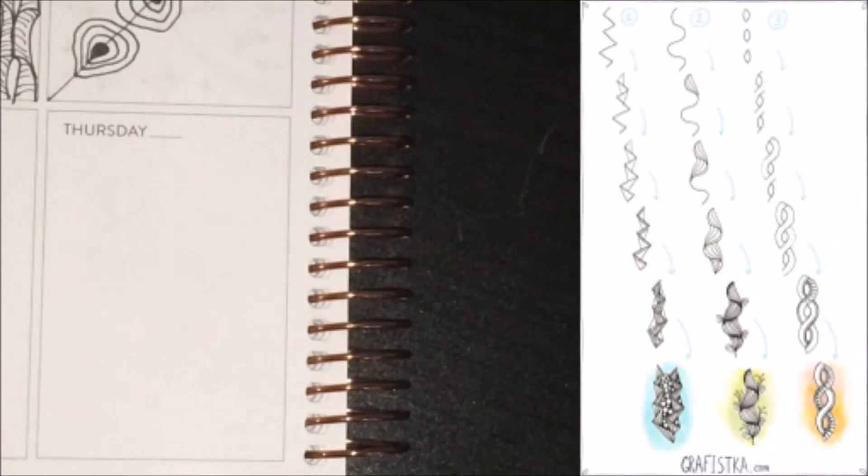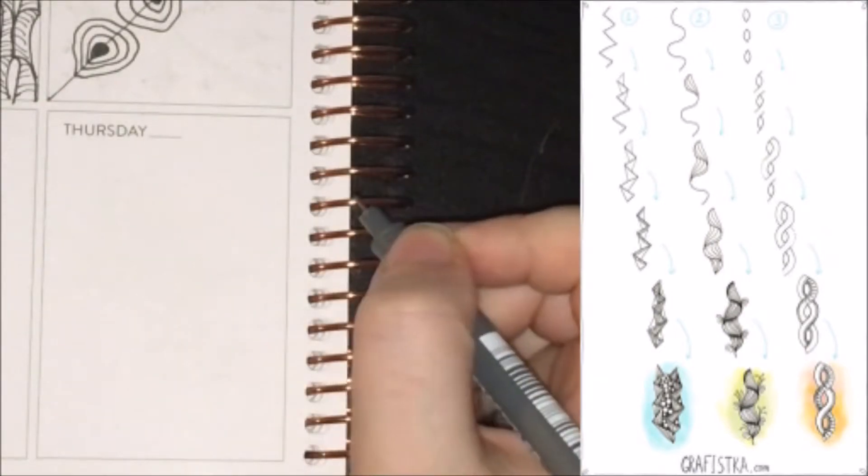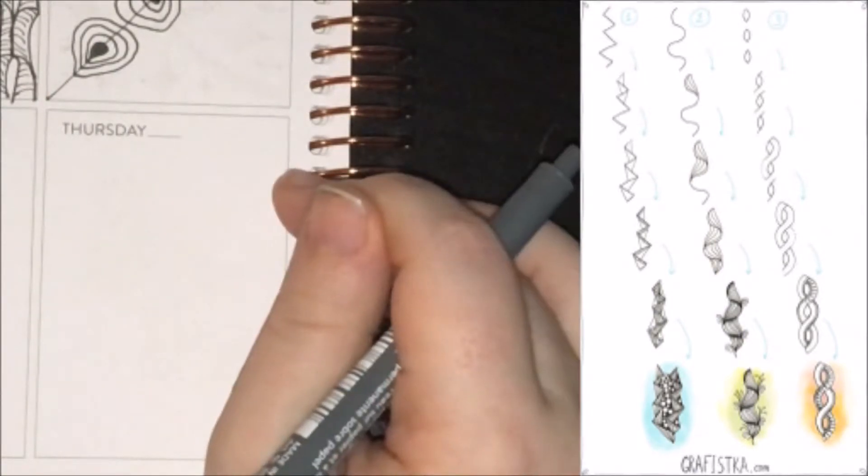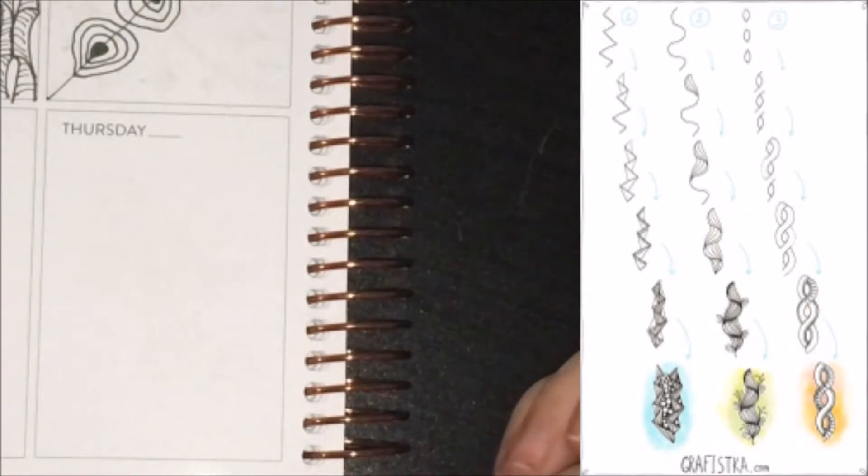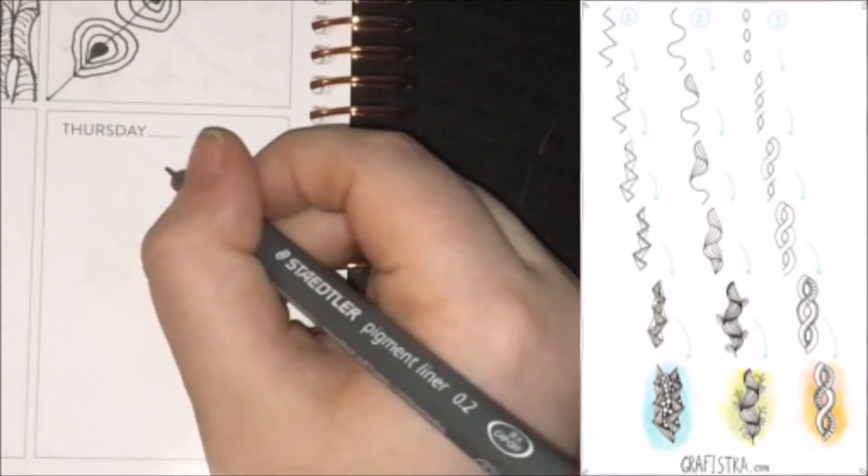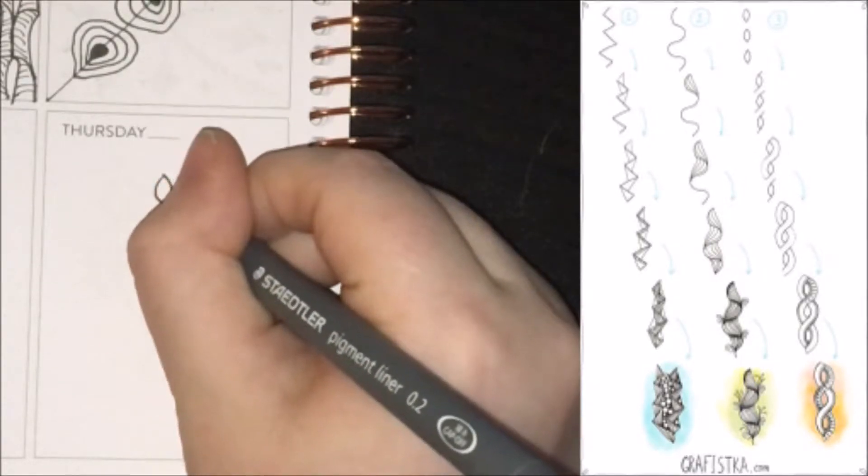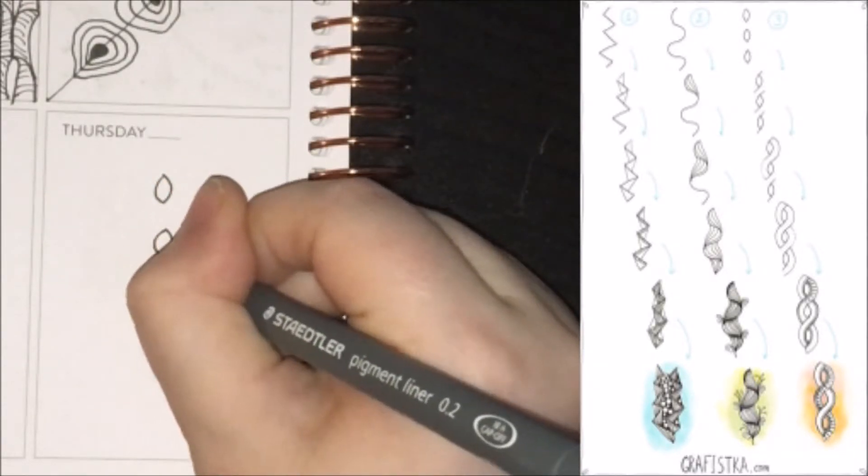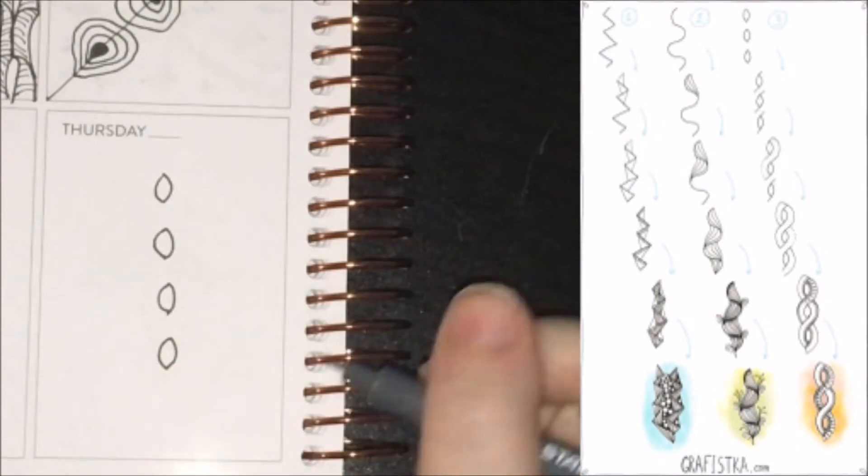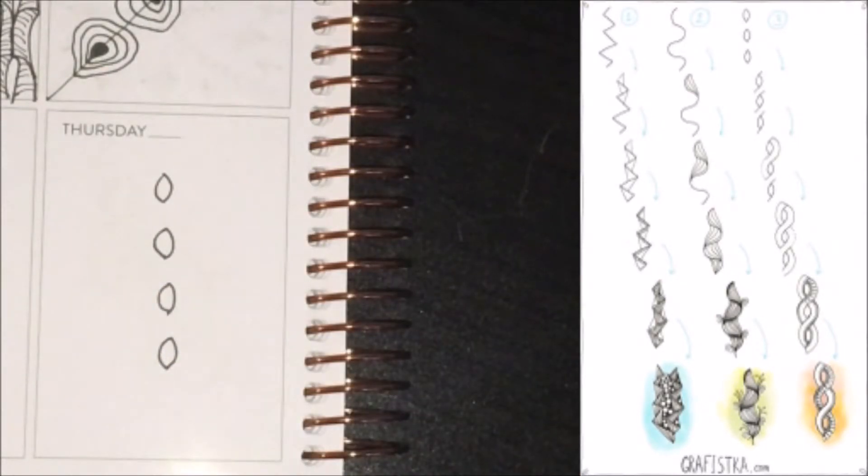The next tangle I have for you all today is also from Graphistica and is unnamed. And of the three in the picture on the right, I'm actually going to do the far right one. So the way you want to approach this is you want to create these oval-like shapes. And the way I suggest doing that is by doing pairs of parentheses that touch each other. And you can make this as long as you wish.